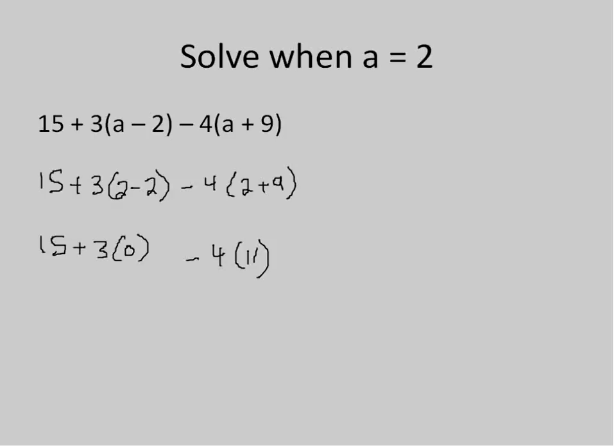Now I'm going to, again, do my multiplication from left to right. So I'll start off with multiplying 3 times 0, which is 0. And then I'm going to subtract 4 times 11, which is 44.